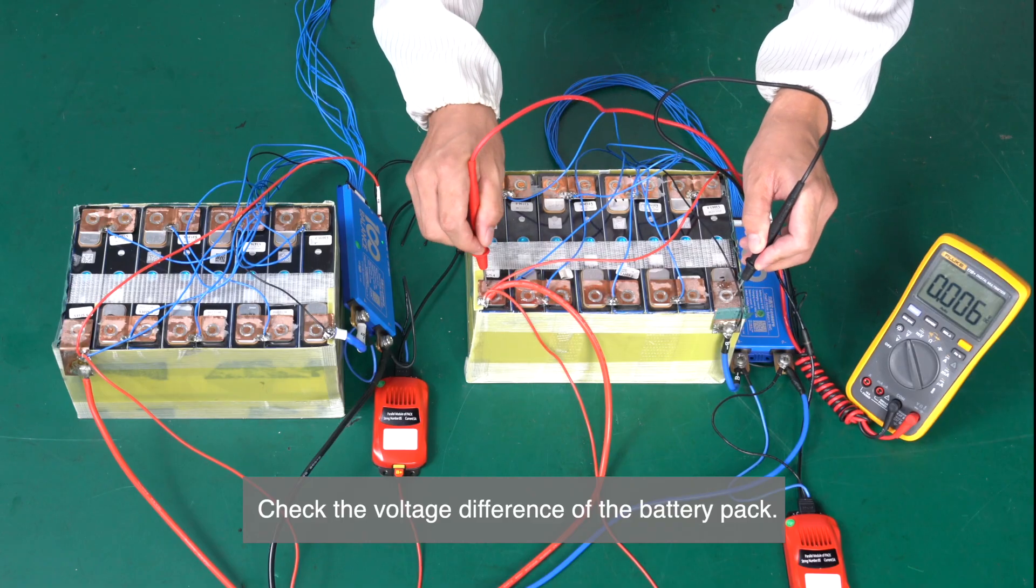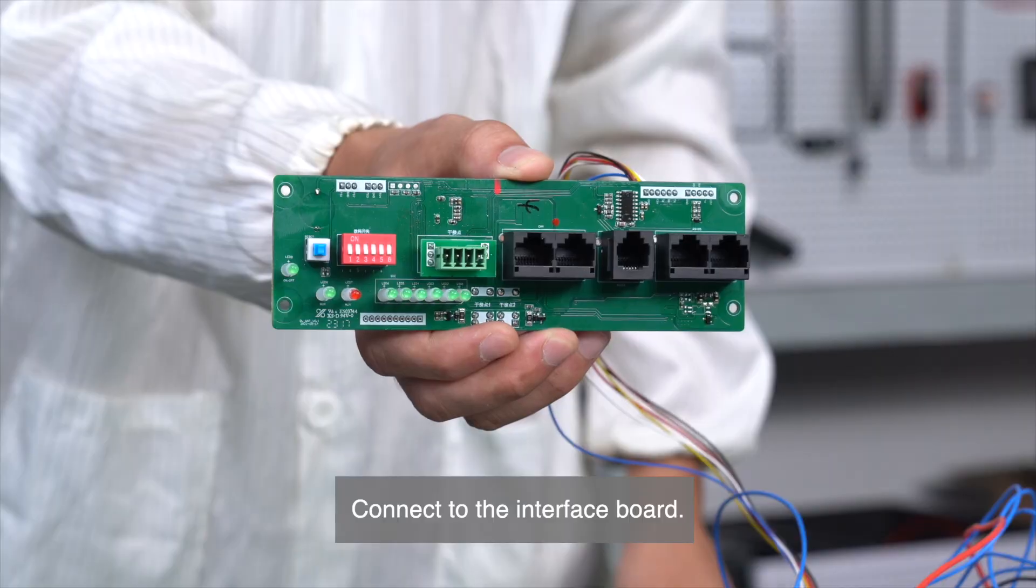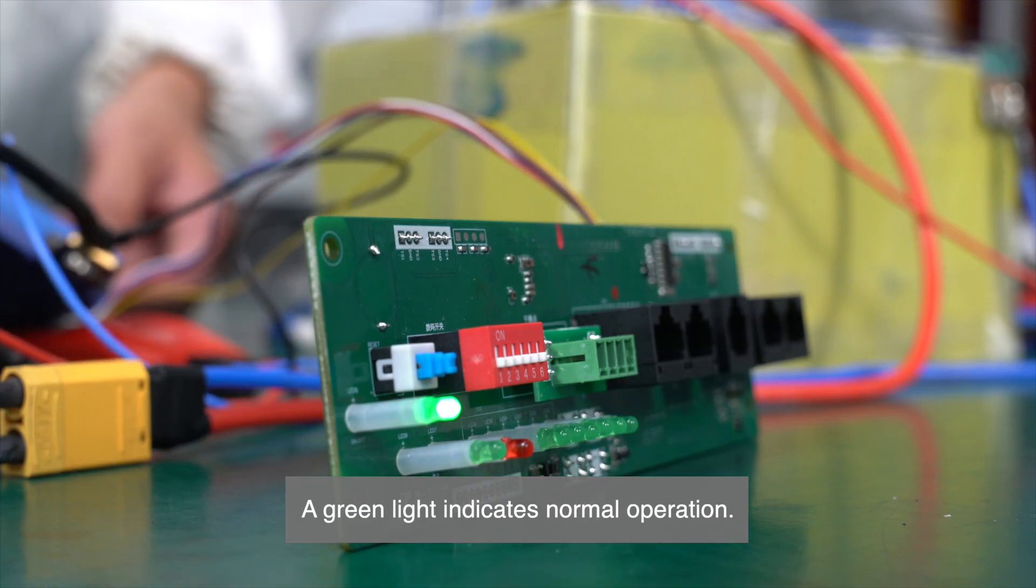Check the voltage difference of the battery pack. Connect the battery pack. Connect to the interface board. Connect the UART port. A green light indicates normal operation.